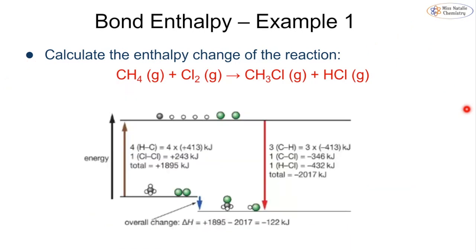This can also be displayed on an energy profile diagram. Most of the time you won't be asked to draw the full diagram showing bond enthalpies — this is just to help you understand it — but we can see it gives the same final answer of minus 122.